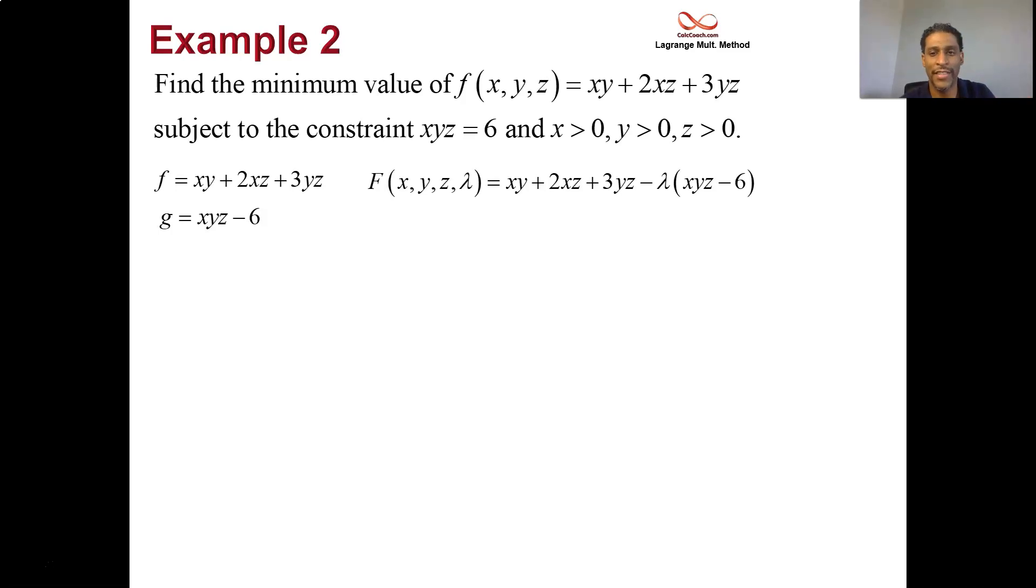All right? What is the x partial of capital F? First term is a y, second term is a 2z, and then the g part has a minus lambda yz. What about the y partial? First term is an x, third term is a 3z, constraint part minus lambda xz. What about the z partial? Second term is a 2x, third term gives a 3y, constraint gives minus lambda xy. And as a formality, the lambda partial is always minus g, and that guy being equal to 0 means g equals 0 means your constraint is true.